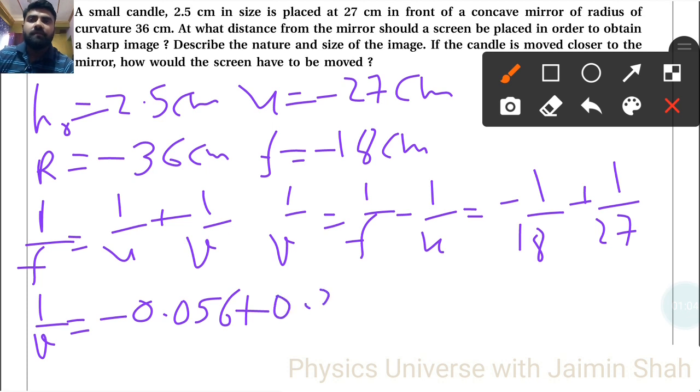That is 0.03703 minus 0.056. This gives V equal to minus 52.73 centimeter, so that is the image distance.